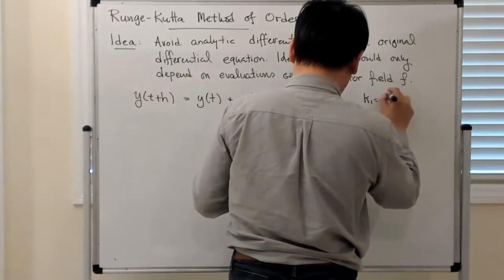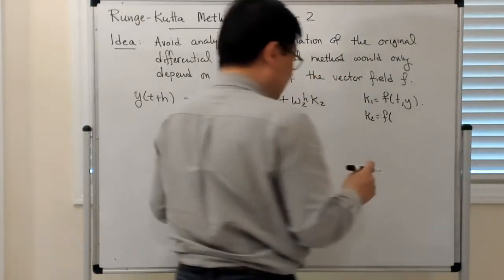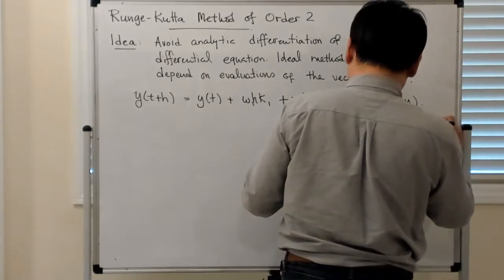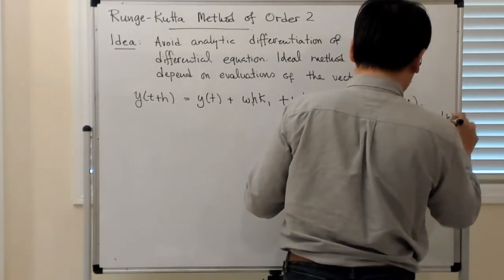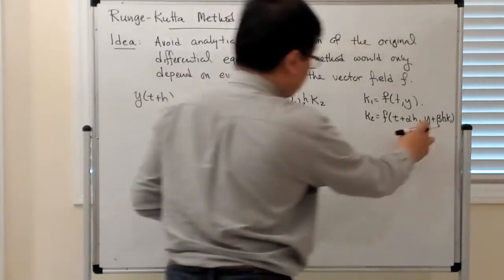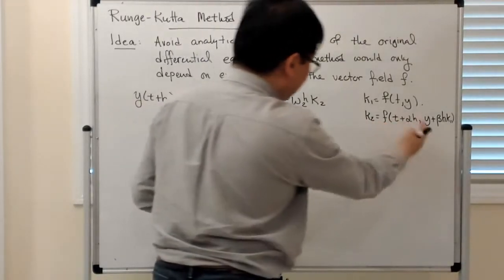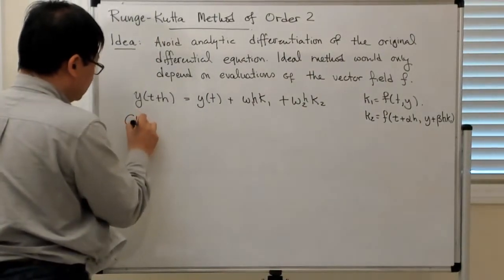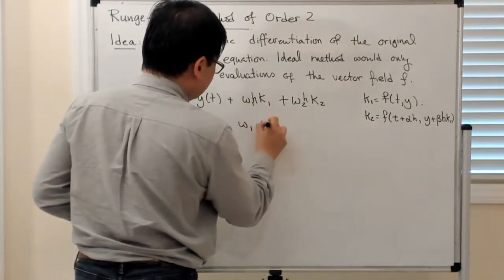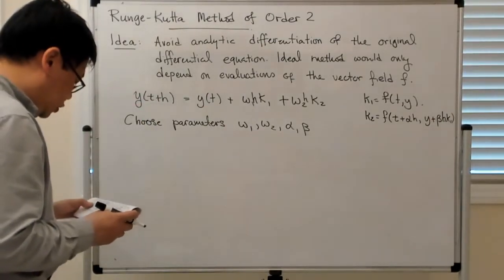Here k1 = f(t, y) evaluated at the initial point, and k2 = f evaluated at a slightly different time and point: t + αh and y + β·h·k1. You can think of k2 as evaluating f at some approximation of y at a different time. I need to choose parameters w1, w2, α, and β so that this is a good approximation of y(t+h).